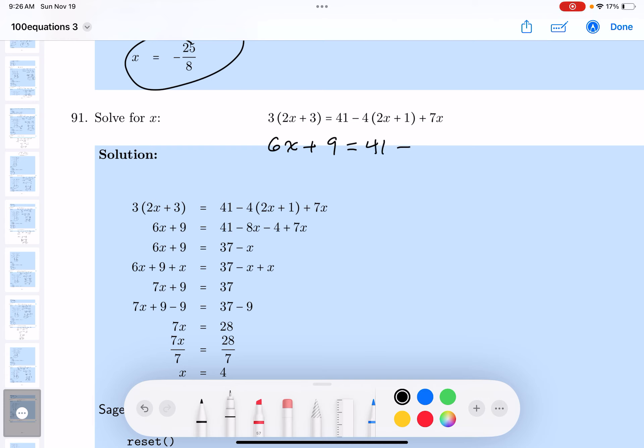41 minus 4 times 2 is 8x. That's minus 8x. And minus 4 times 1 is minus 4 plus 7x. What do you get here? 6x plus 9.